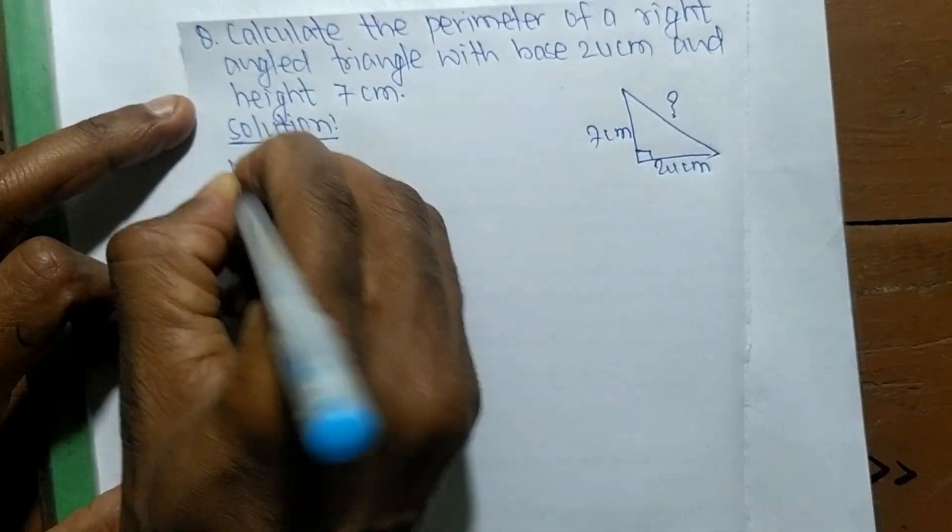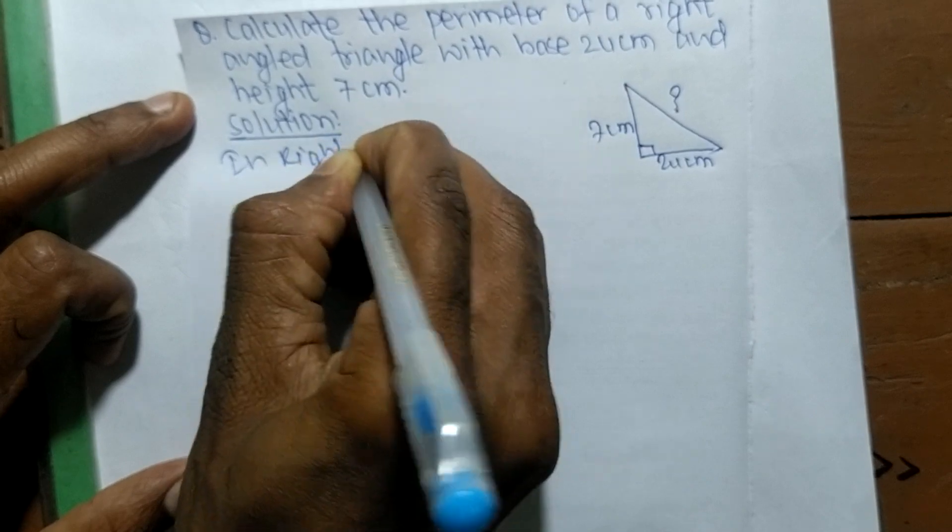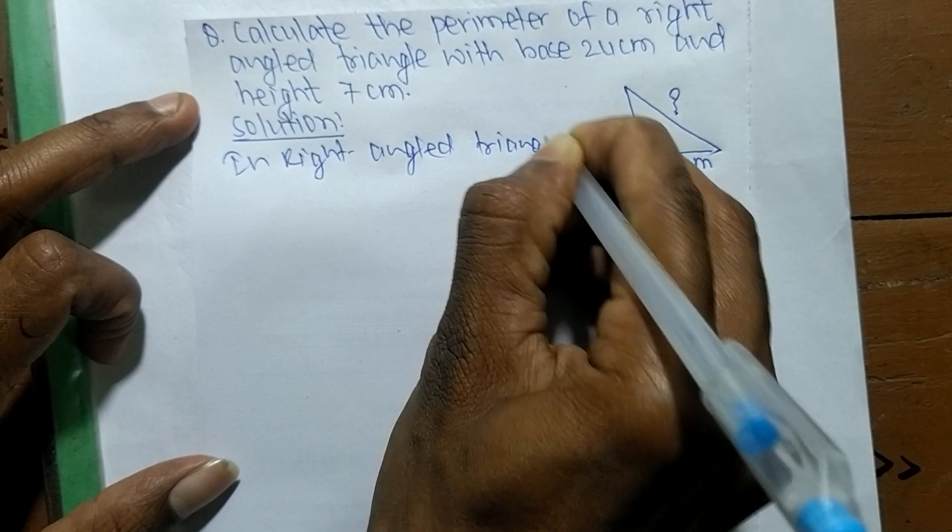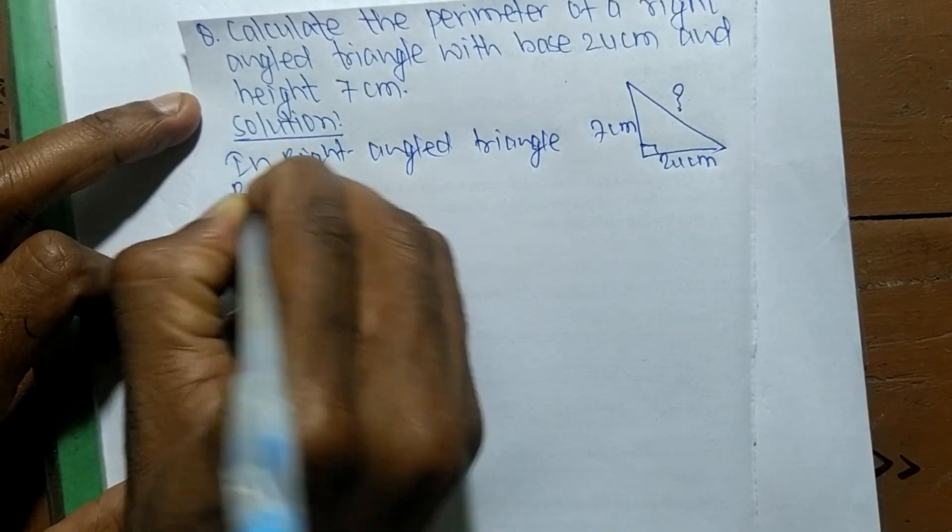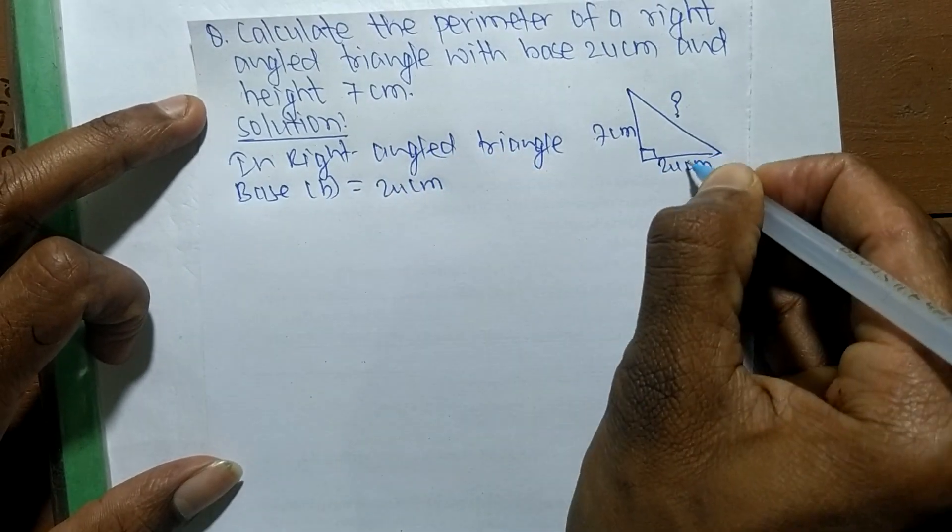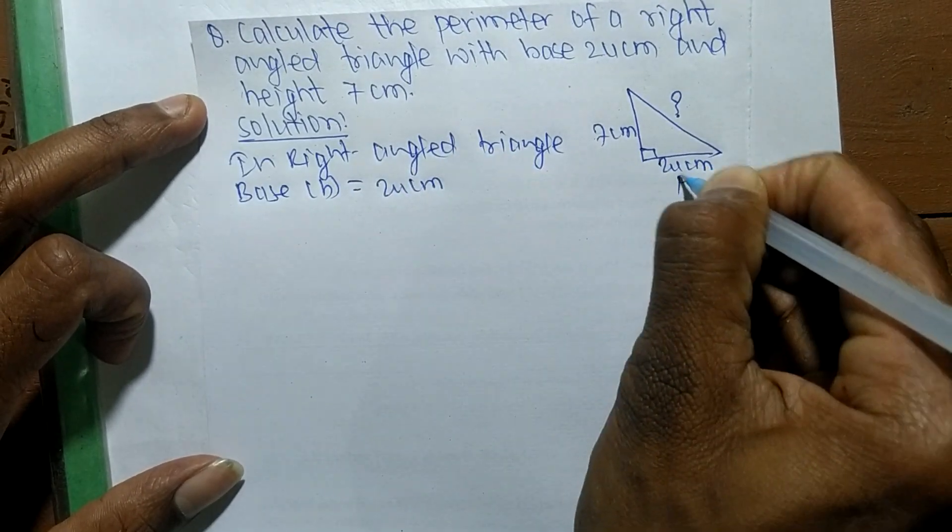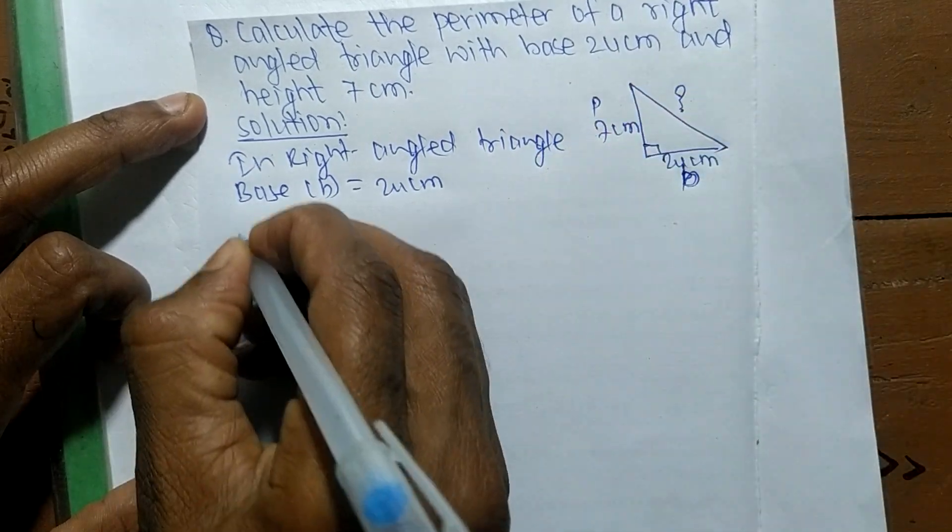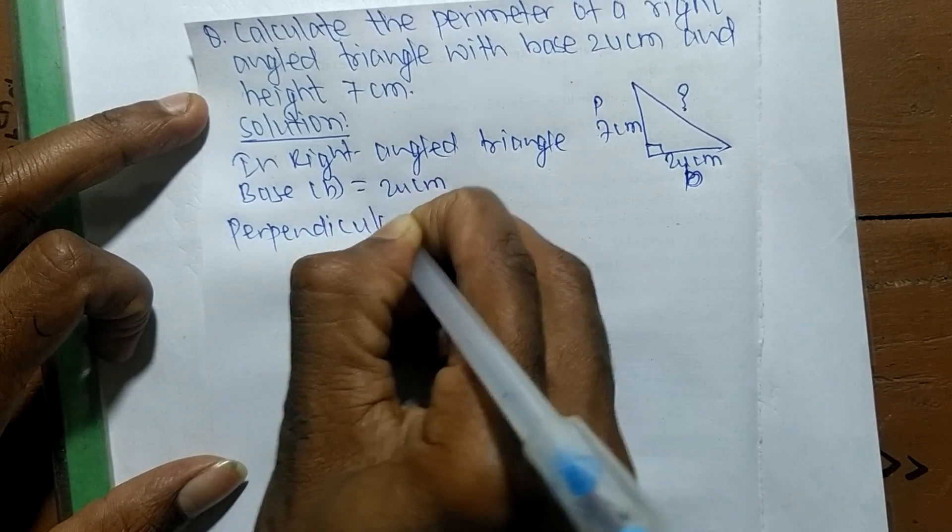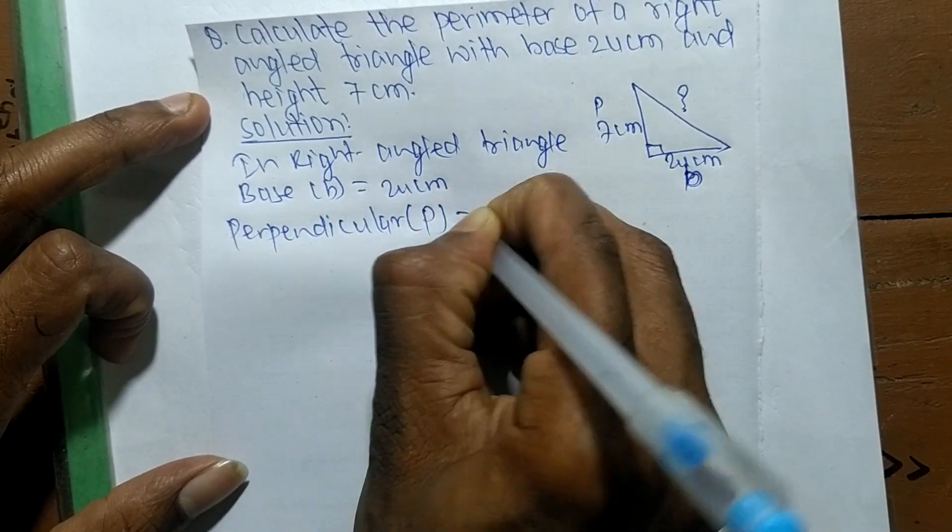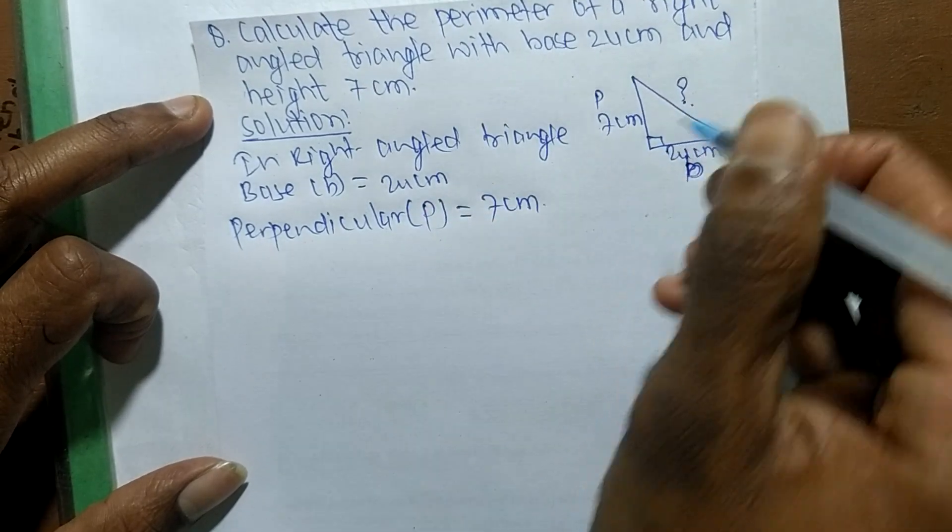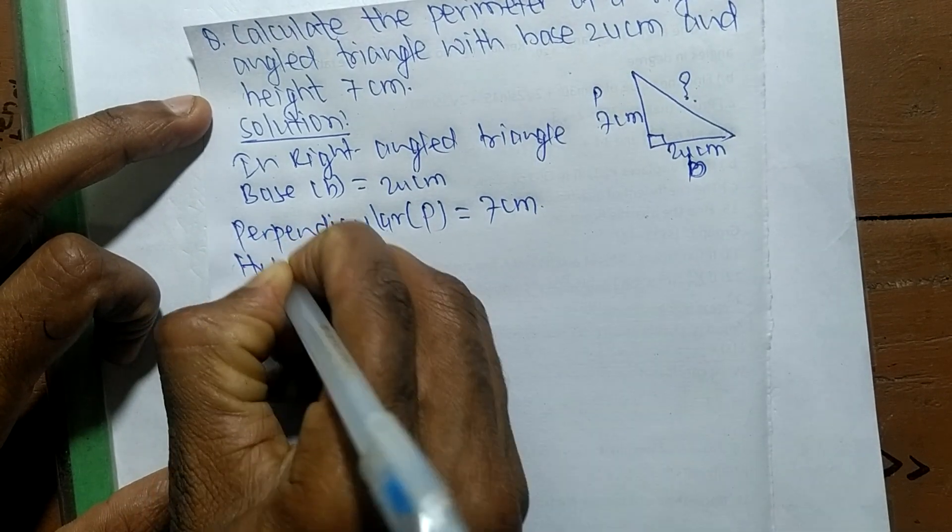In a right-angled triangle, we have given here the base B is 24 centimeters. When we take it as perpendicular, we represent it by P, so perpendicular P is equal to 7 centimeters, and this one is the hypotenuse.